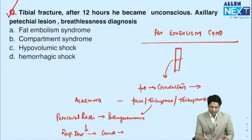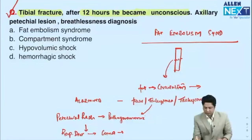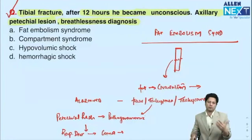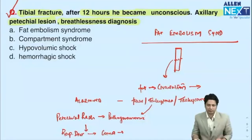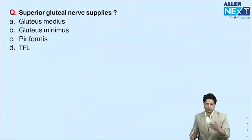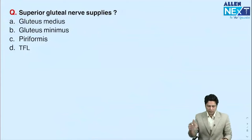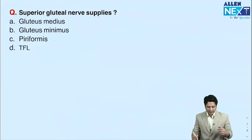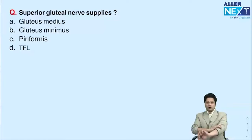If there is a tibial fracture, 12 hours later the patient becomes unconscious, and axillary petechial lesions with breathlessness are present — the most probable diagnosis is fat embolism syndrome. This is confirmed by pathognomonic features. Next question is related to the superior gluteal nerve and the Trendelenburg test.